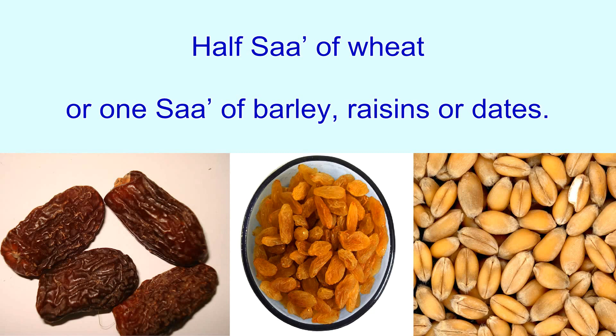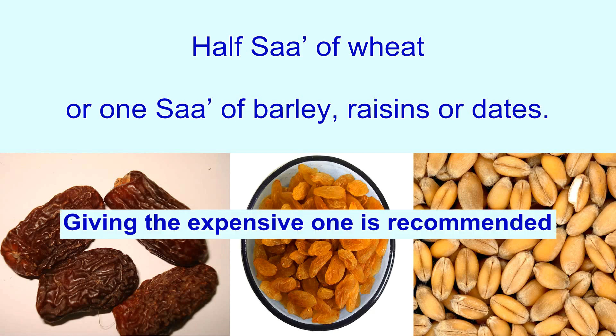If you have little savings, then you can give half saa of wheat — that is something cheap nowadays. If you have more, then give on the basis of the value of barley, or give the value of raisins or dates, which is a little bit more expensive.